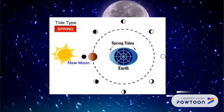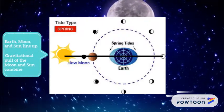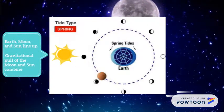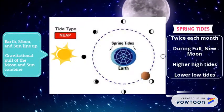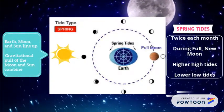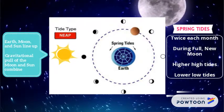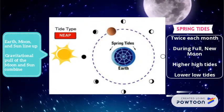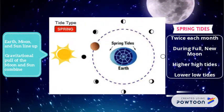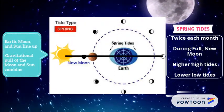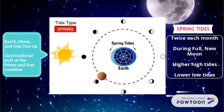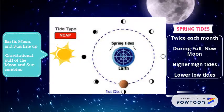For spring tides, the earth, moon, and sun line up to create a combined gravitational pull from the moon and sun. This creates a higher high tide and a lower low tide.